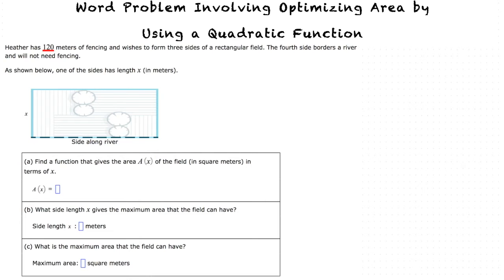In this problem, we are given 120 meters of fencing and a rectangular field that only has three sides of it covered with that fencing.